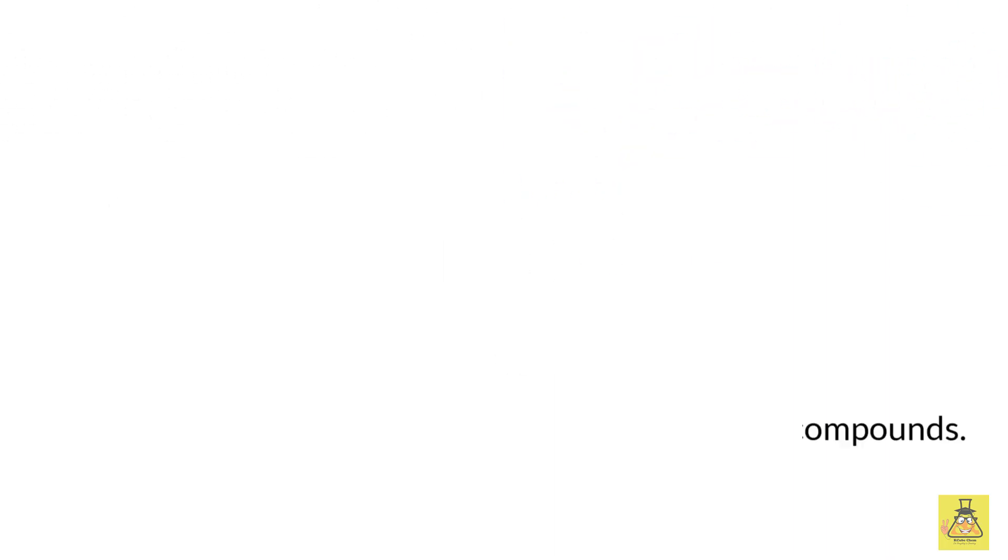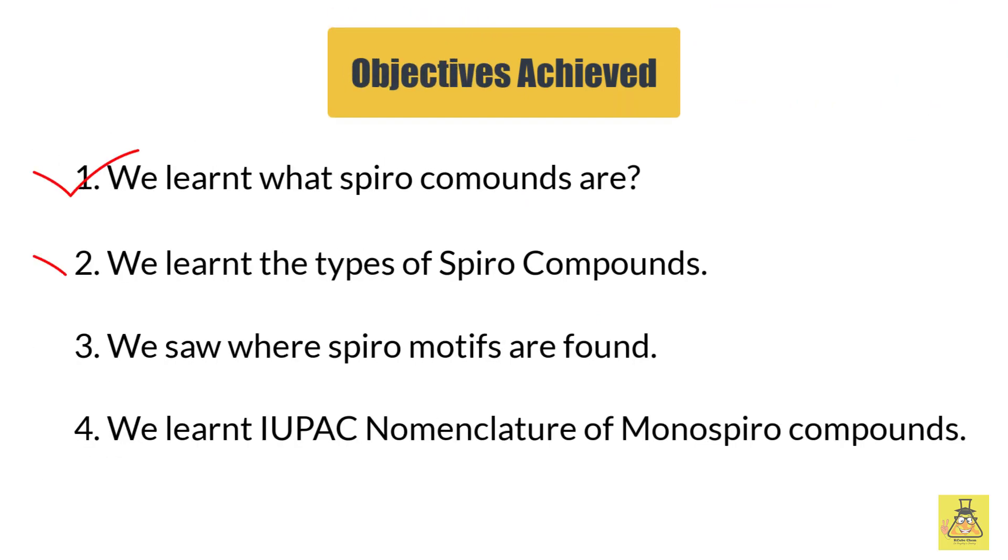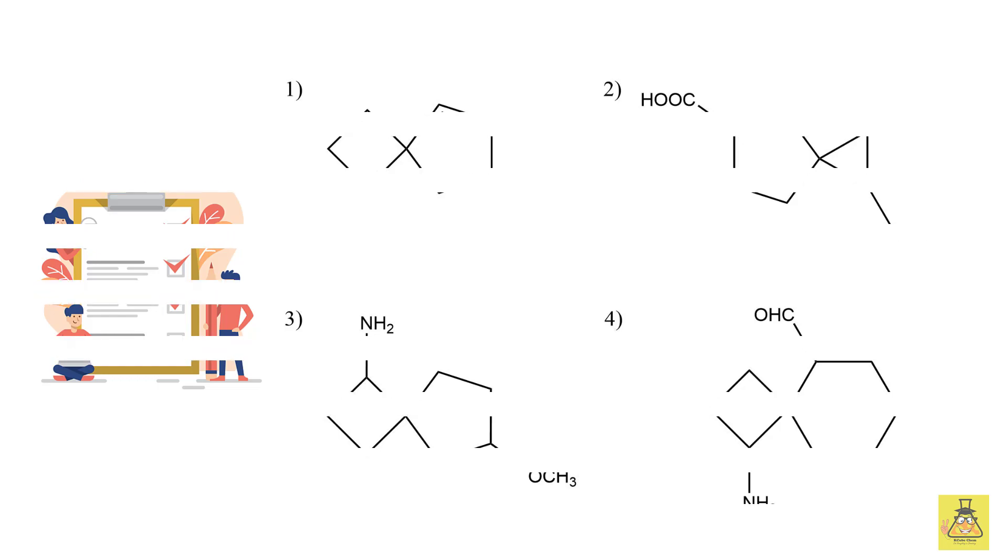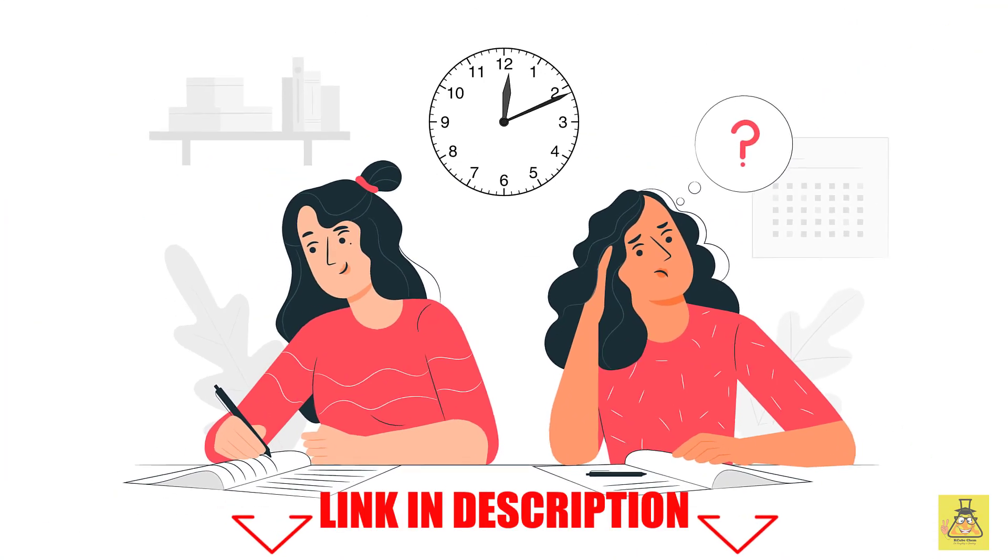Well, with this I hope naming a mono spiro compound will not be a problem anymore. Now here are a few structures for you to try. Please leave the answers in the comment section below. If you want to solve more problems, I'll also be attaching a link for a small test below in the description. Please feel free to take that test whenever you can.